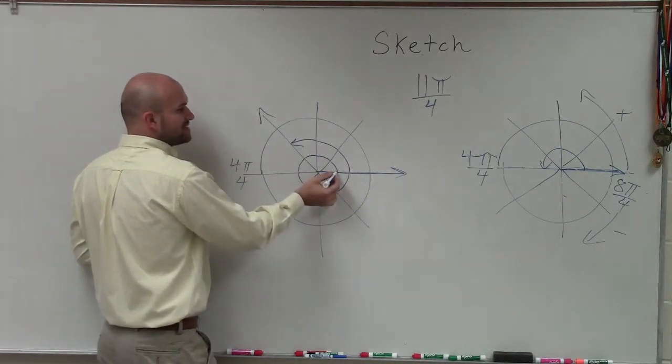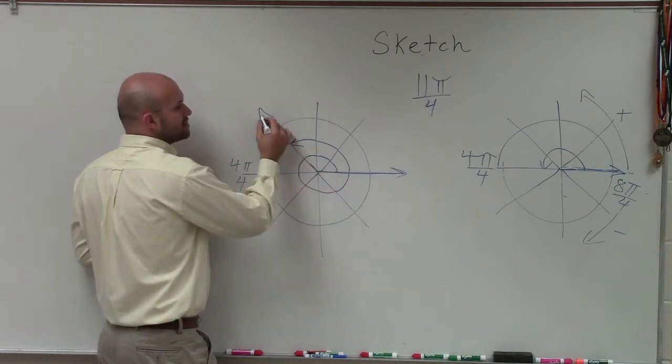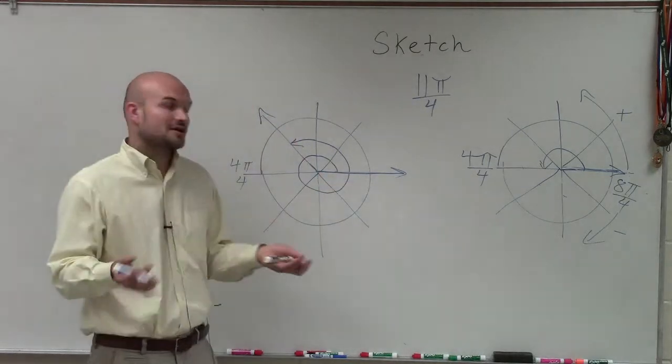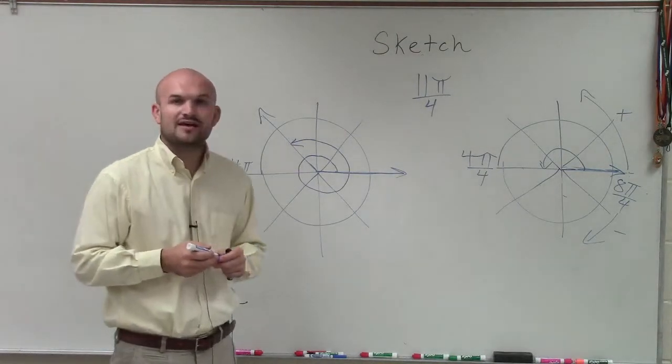So you can see the rotation of this ray started here, and then here would be your terminal side. And we went in the positive direction. So there you go, ladies and gentlemen, that is how you sketch 11π over 4. Thanks.